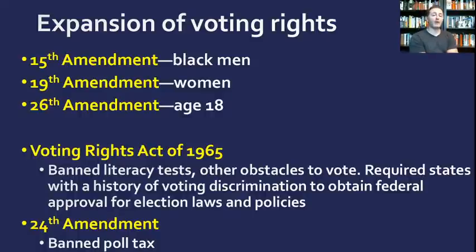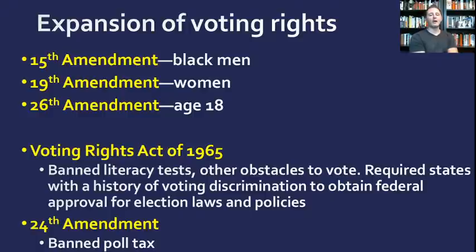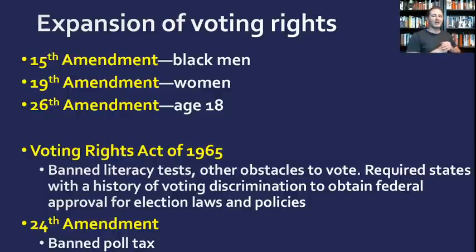Once Jim Crow laws went into effect, African American voter turnout was extremely low — especially in southern states — because those states did everything they could to stop them from voting, including literacy tests and poll taxes, with grandfather clause exceptions for poor white voters. The Voting Rights Act banned literacy tests and other obstacles to voting. It also required that states with a history of voting discrimination obtain federal approval — preclearance — for any changes to their election laws. This is relevant to Shaw v. Reno, which we'll discuss more in tomorrow's case review.